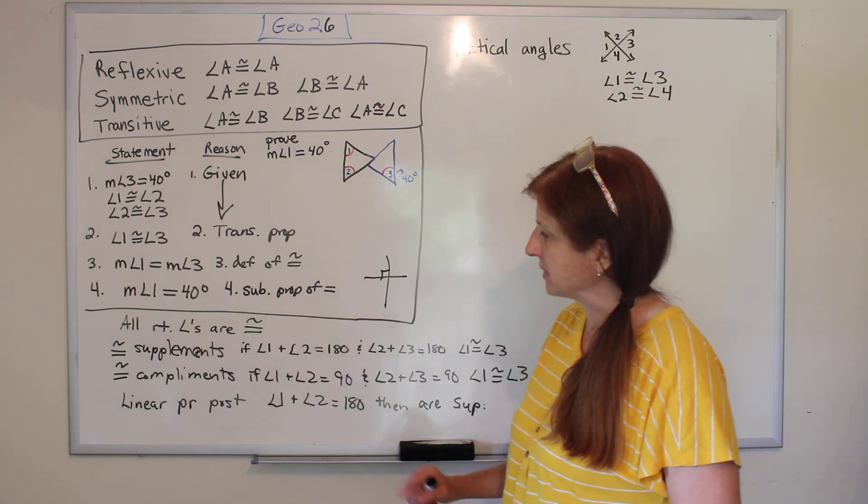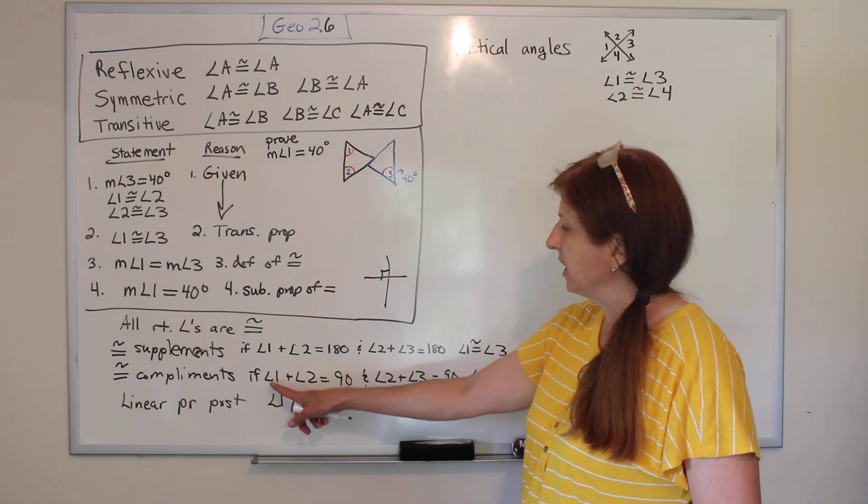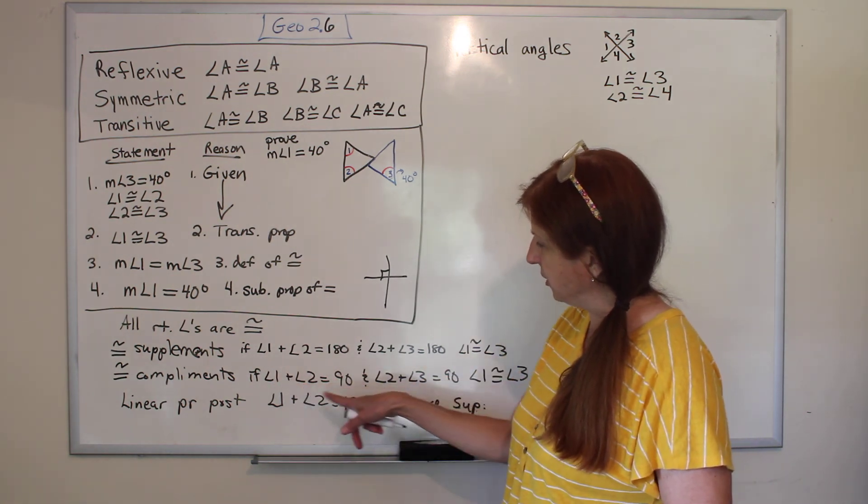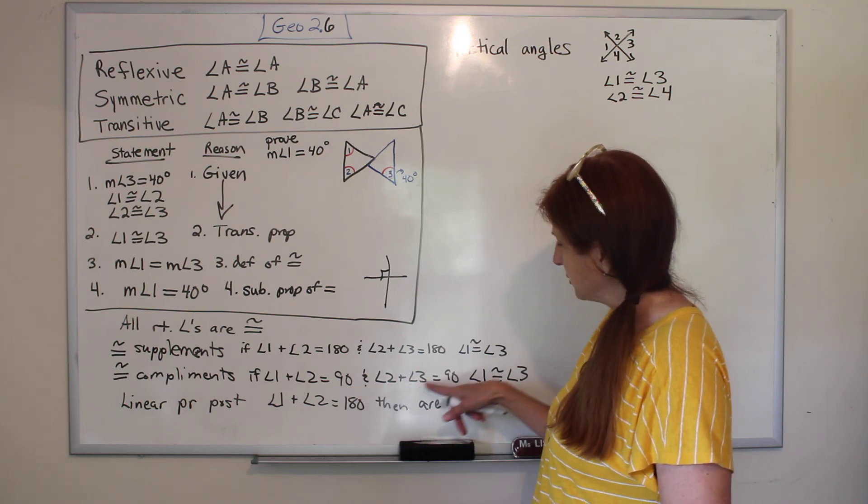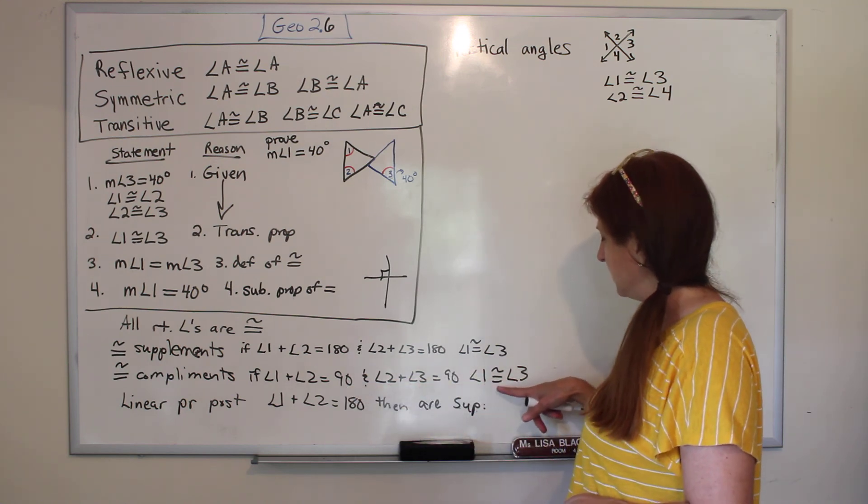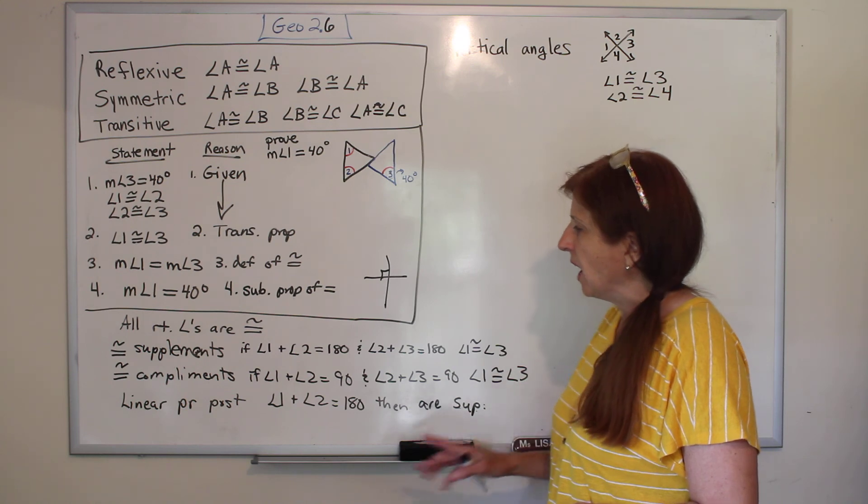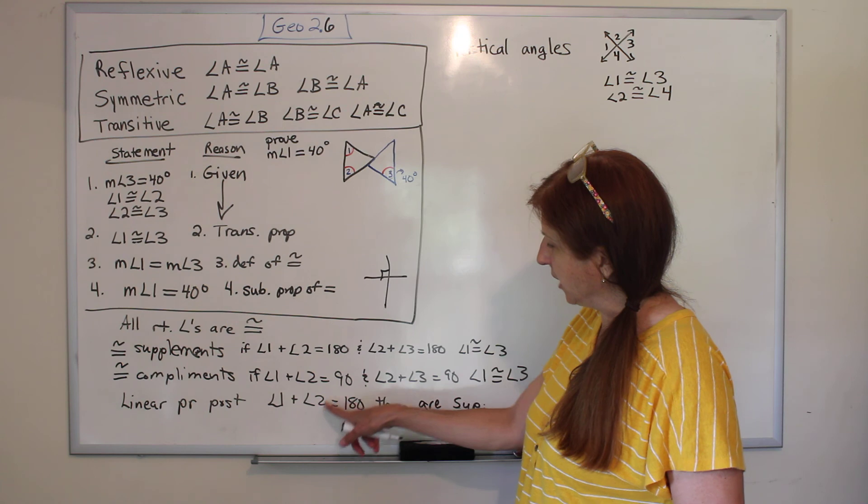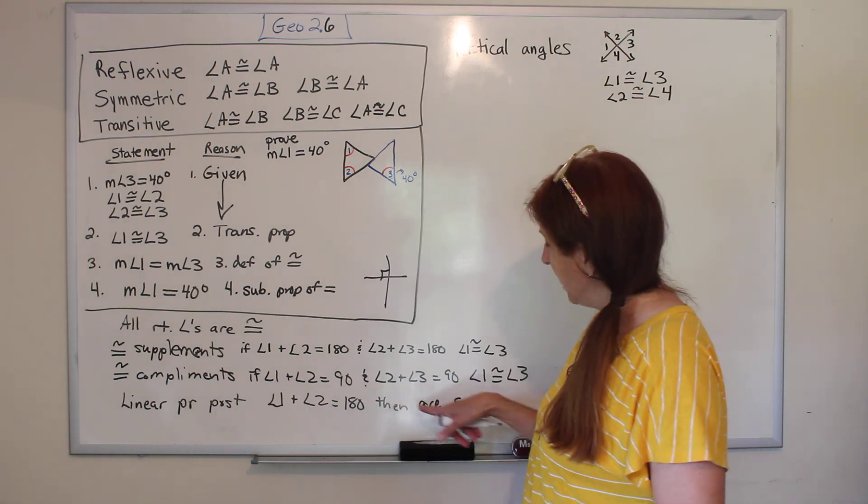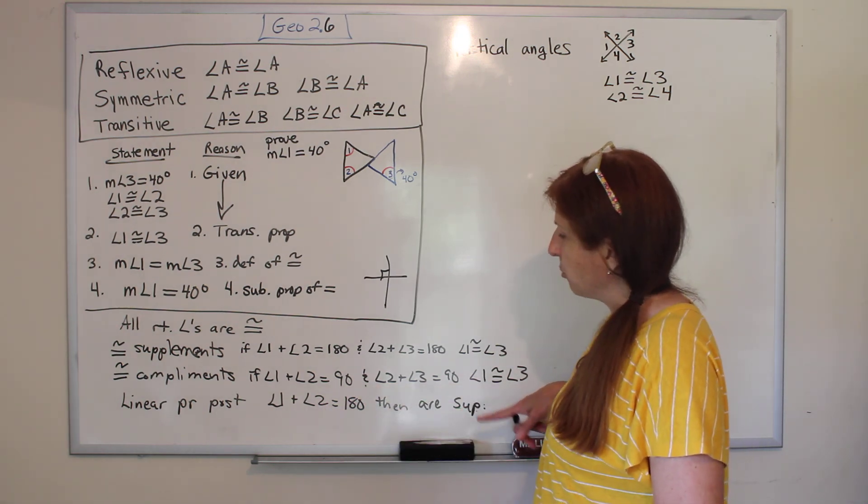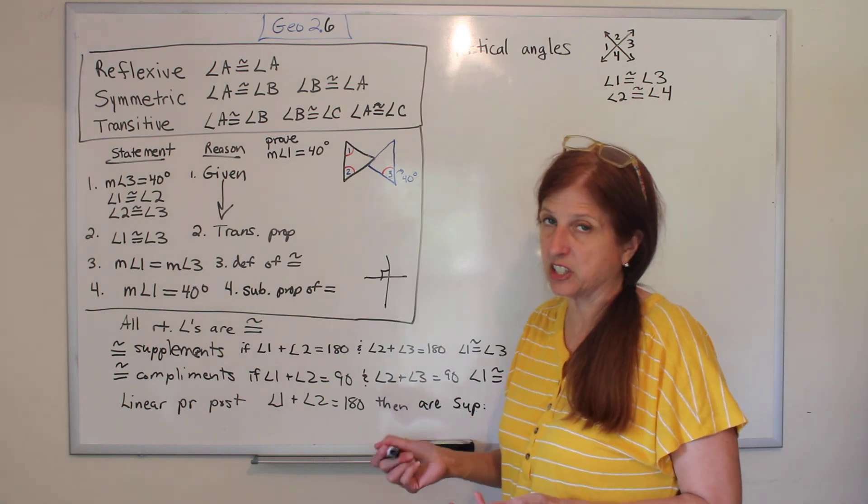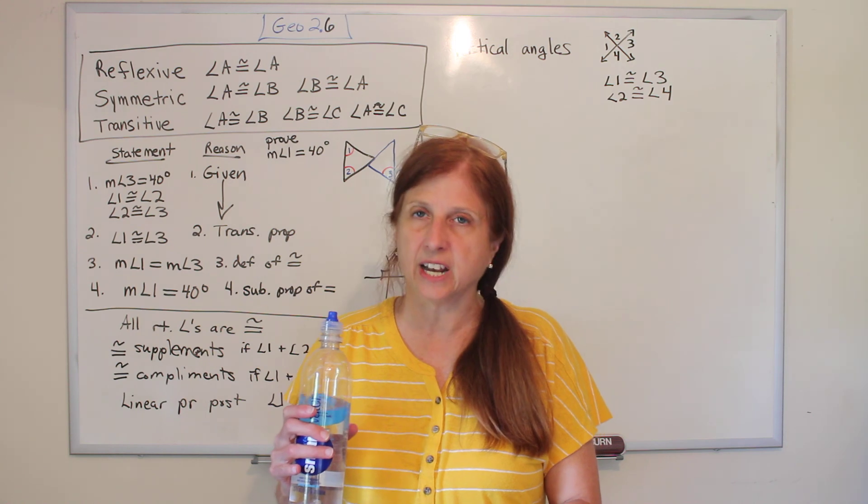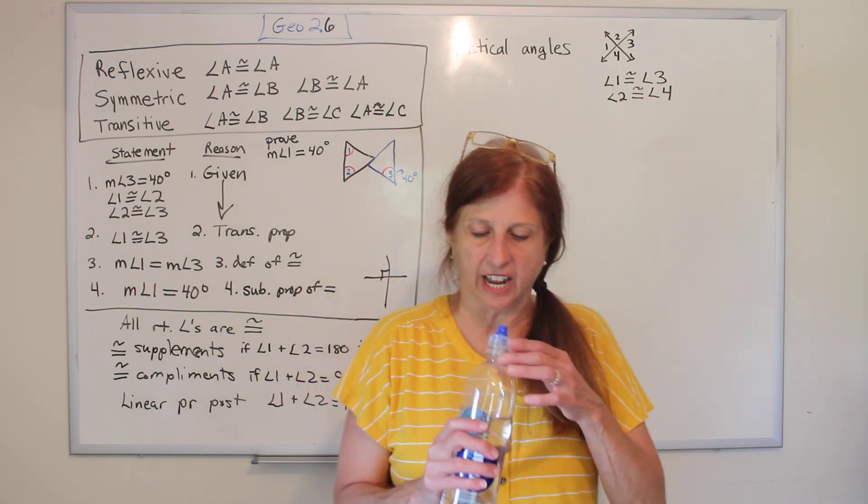So the congruent complements theorem is the same thing, that if measure of angle one plus the measure of angle two is 90, and two plus three is 90, then one is congruent to three. There's also one called the linear pair postulate, and it says if angle one and angle two add up to 180, then they are supplementary, but that's just really the definition of supplementary, is things that add up to 180. All right, so those are all in your book. You can study those green boxes and take a look at it.